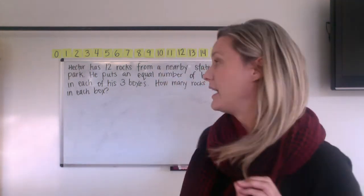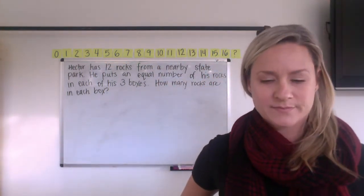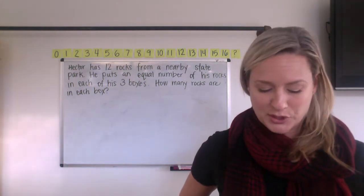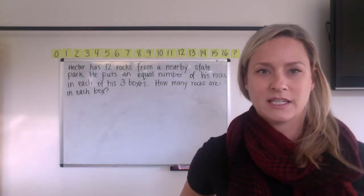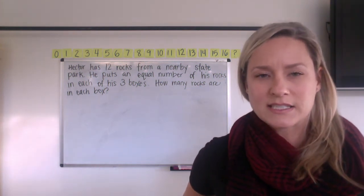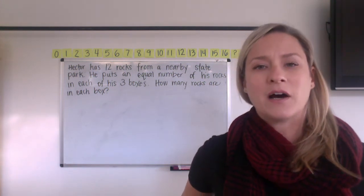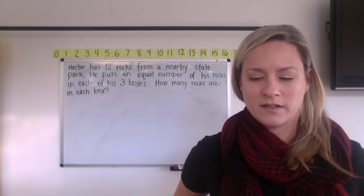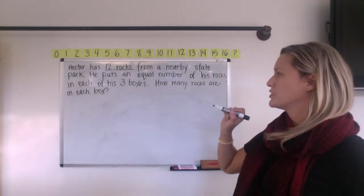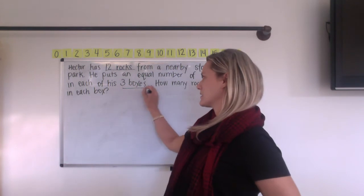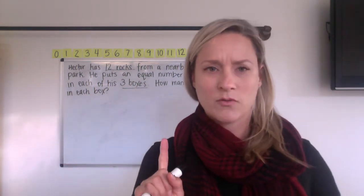All right. We are going to do a story problem next. Grab your whiteboards if you have them, get your stuff ready. We're going to do a story. All right. We've got our story problem. We've got to read it now. So we've got Hector has 12 rocks from a nearby state park. Okay. So imagine that in your head. I'm sure you've all been to a state park. You've probably seen some pretty cool rocks and he collects 12 of them. Okay. So hold that picture in your mind. He puts an equal number of his rocks in each of his three boxes. How many rocks are in each box? So we know for sure that he collected 12 rocks and he is going to share those rocks equally amongst three boxes. We have to figure out how many rocks go into each box.